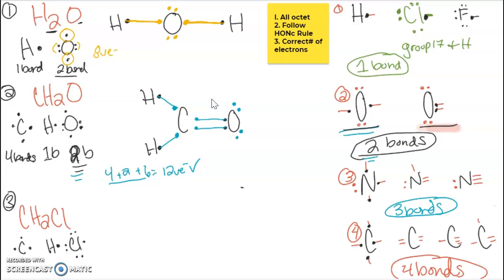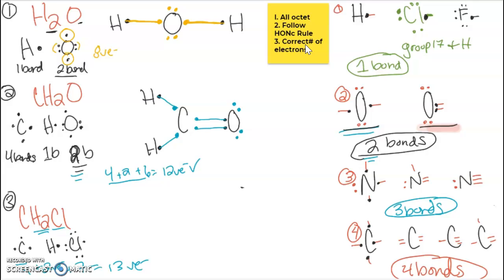Our next molecule is CH₂Cl₂. Carbon is going to give four valence. There are two hydrogens giving two valence. One chlorine — wait, two chlorine — each has seven valence. So there's going to be a total of 14 plus 4 valence electrons for this molecule. Carbon bonds four times, hydrogen bonds once, and chlorine as a halogen also bonds one time. Carbon bonds the most, so we put it in the center with two hydrogens and two chlorines on the outside.